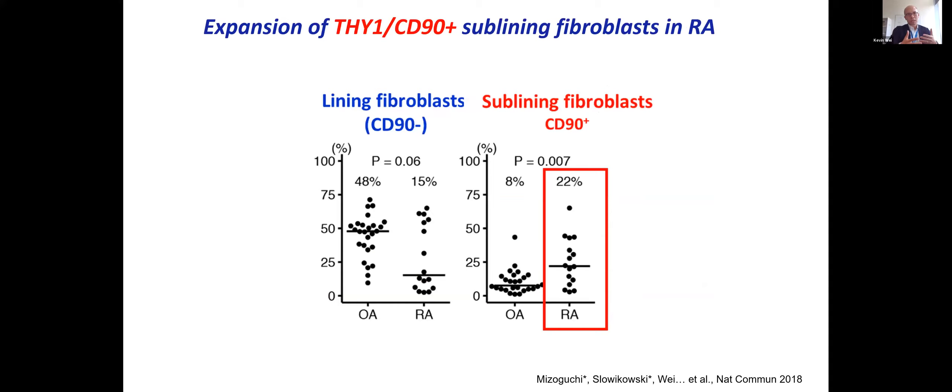Using these markers with flow cytometry on disaggregated synovial tissue, we can subset fibroblasts based on CD34, PRG4, and THY1. We see a distinction between THY1 and PRG4-positive fibroblasts versus THY1-negative and PRG4-positive fibroblasts, representing lining and sublining fibroblasts respectively. When comparing OA versus RA, we can see a difference in proportions — in OA the dominant stromal population are lining fibroblasts at about half, whereas RA is characterized by enrichment of sublining fibroblasts, making about 22% of all stromal cells.